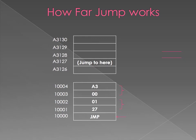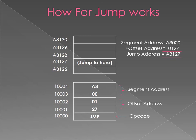Let's see how a far jump works. Suppose we have a memory segment from 10000 to 83130. The jump instruction is loaded at 10000. The first byte contains the opcode, the next bytes contain the offset, and the following bytes contain the segment address. To find the jump address, we add the segment address plus the offset address. In the given example, the segment address is A3000 and the offset address is 0127, giving us a jump address of A3127.